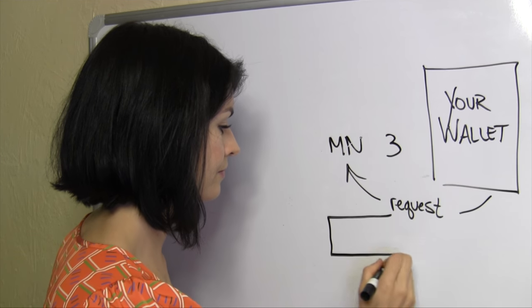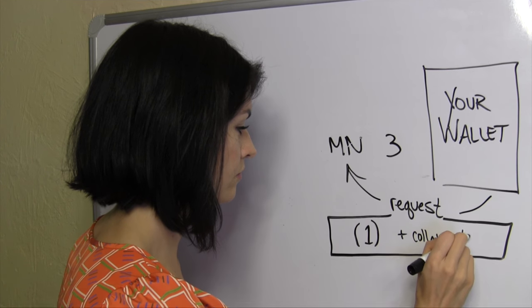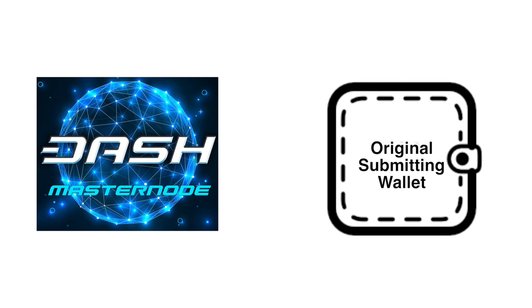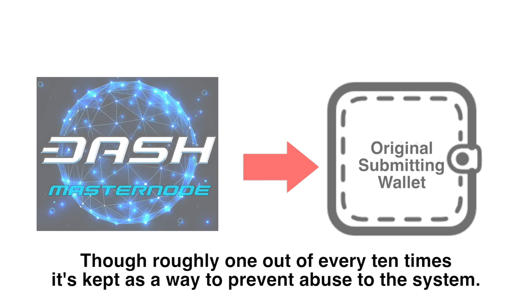And now, what about that collateral slash fee I mentioned earlier that always gets submitted with denominations to be mixed? It's almost always returned by the masternode to the original submitting wallet, though roughly one out of every ten times it's kept as a way to prevent abuse to the system.